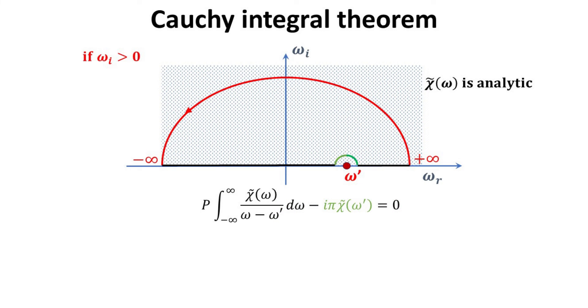As we see, the analyticity of chi tilde allows us to compute chi tilde at any real frequency in terms of a principal integral over all other real frequencies. Let's just rewrite this equation to emphasize this point more clearly.